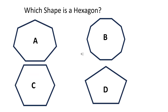Which shape is a hexagon? The right answer is C.